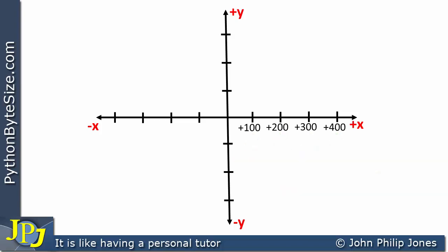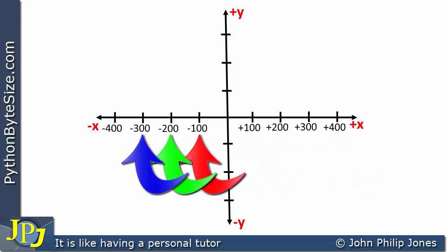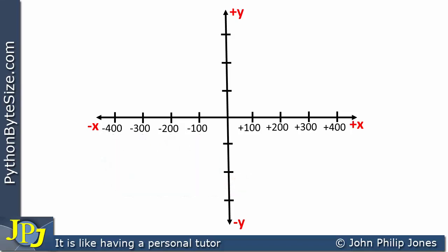If we consider the negative part of the graph, we go minus 100, minus 200, minus 300 to minus 400. For the positive y axis, we go up 100, 200, and 300 — all positive. And for the negative y axis, we have minus 100, minus 200, and minus 300.